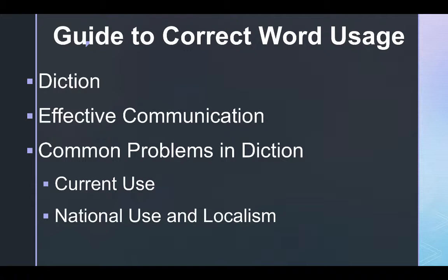The book argues that sometimes we take for granted that what we say will be interpreted by the reader the way we intend. Current use is one of these issues. You want your words to be understandable to readers, so consider whether your word choice is still in current use. Some words are obsolete — rarely do you hear someone say 'anon,' something you might hear in Shakespearean plays.